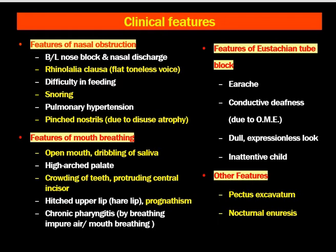Features of mouth breathing include open mouth, dribbling of saliva, high arched palate, crowding of teeth, prominent and large central incisors, raised upper lip resembling a hare lip, prognathism, and chronic pharyngitis from breathing impure air through the mouth.